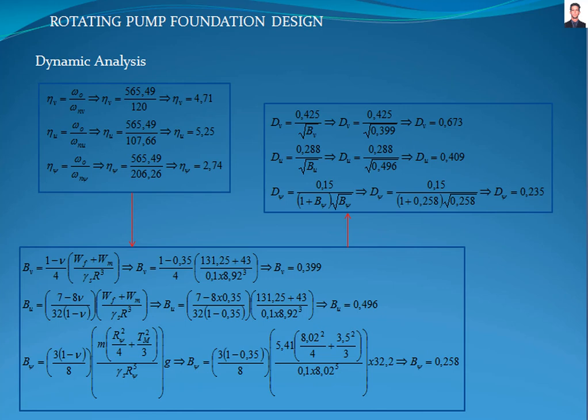Now we calculate the tuning ratio with this equation, where eta-V is the vertical tuning ratio, eta-U is the horizontal tuning ratio, and eta-psi is the rocking tuning ratio, giving results of 4.71, 5.25, and 2.74 respectively. When the tuning ratio is less than 1, the system requires isolators to increase the value of the tuning ratio. The American Concrete Institute 351.3R standard recommends a minimum tuning ratio of 1.4 to be in the isolation region.